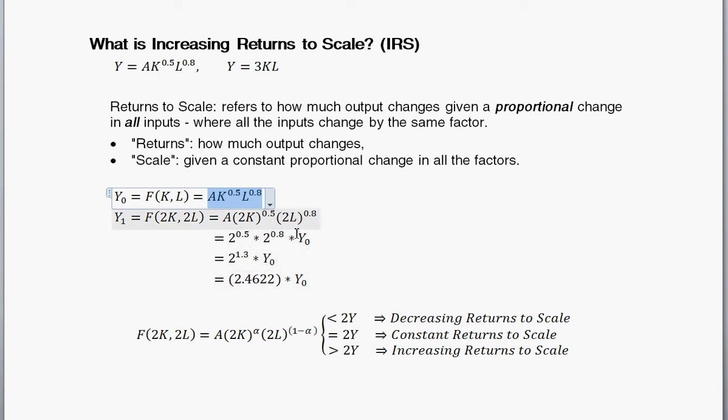So, given this production function and the particular form that it's taken, by doubling the inputs, twice capital, twice labor, we've now more than doubled that initial level of output. This is more than twice that initial level of output. So, that is increasing returns of scale.